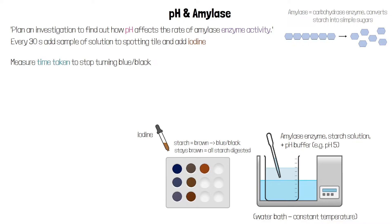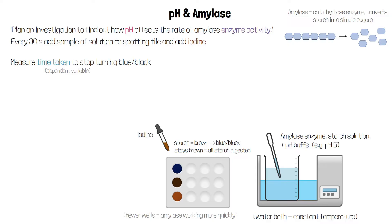We measure the time taken for the solution to stop turning blue-black — this is our dependent variable. The shorter the time to stop going blue-black, or the fewer wells it takes to stay brown, the more quickly the amylase is working.